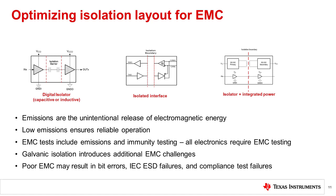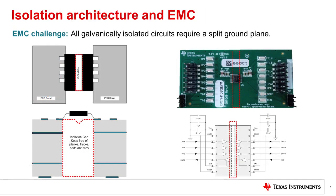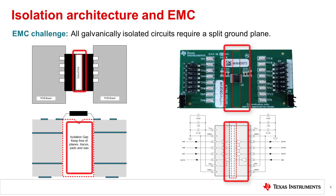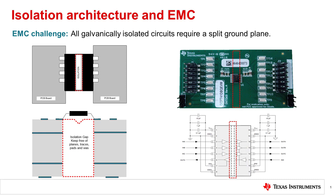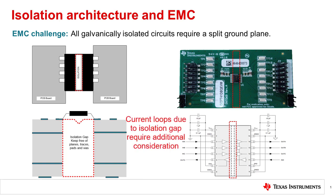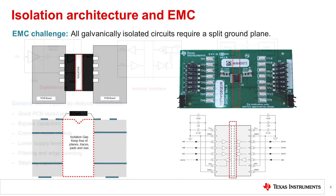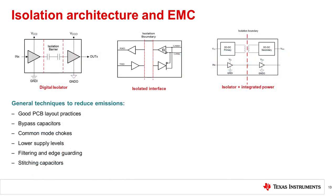When using digital isolators, isolated interfaces, and isolated integrated power devices, understanding the potential source of emissions within a given architecture can play a role in optimizing PCB layout for emissions performance. For isolators, the consequences of poor emissions performance can include bit errors, IEC ESD failures, and EMC compliance test failures. For all galvanically isolated circuits, a split ground plane is required in the PCB design to maintain the functionality of the isolation barrier. This gap in the ground plane is typically the most significant source of radiation, particularly for devices with integrated power components. As signals are propagated across the barrier, currents are generated on the opposite planes, and these currents must always return to their source. The return path completes a loop which can act as an emission source, so optimizing PCB layout is primarily focused on mitigating the source of these currents on the board.